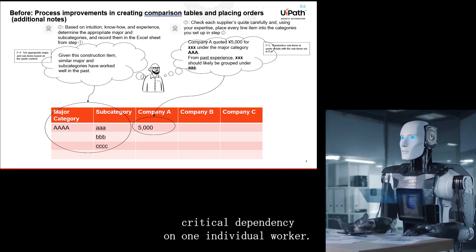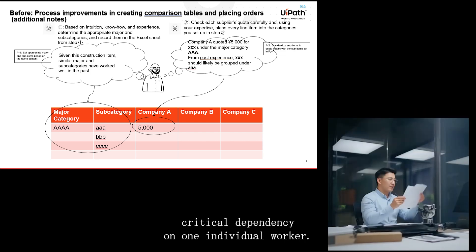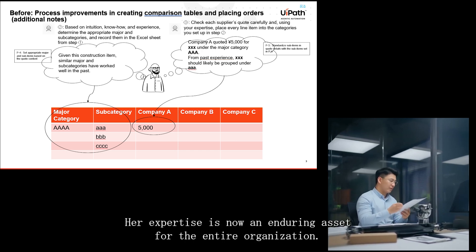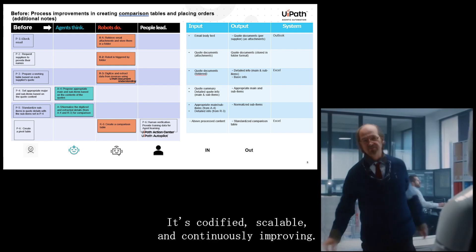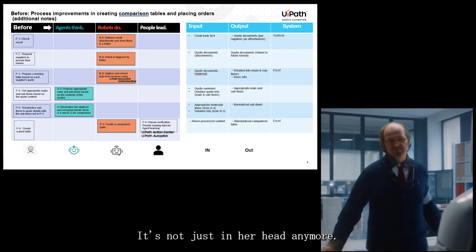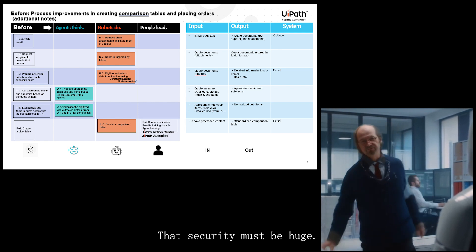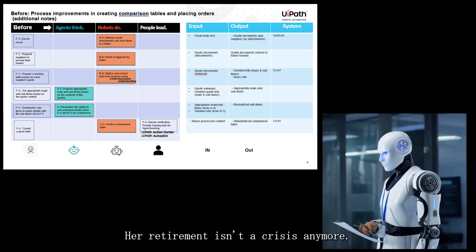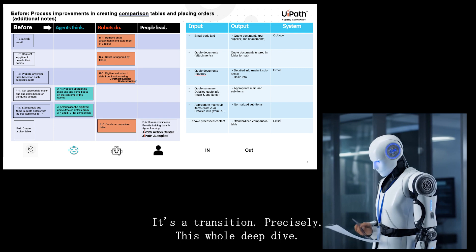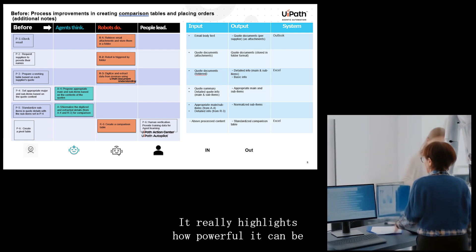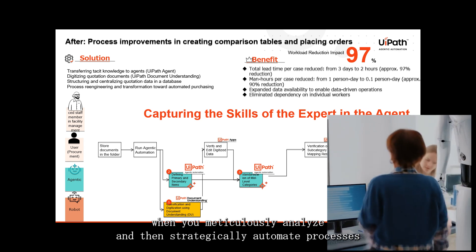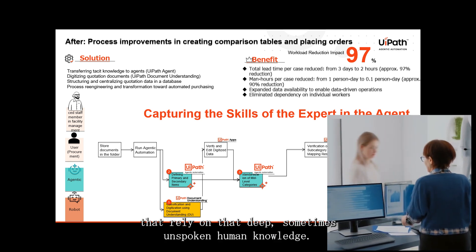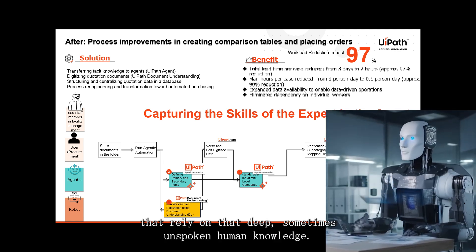Perhaps most importantly, it eliminated the critical dependency on one individual. Sarah's invaluable knowledge and expertise is now an enduring asset for the entire organization — codified, scalable, and continuously improving. It's not just in her head anymore. Her retirement isn't a crisis anymore; it's a transition. This highlights how powerful it can be to meticulously analyze and strategically automate processes that rely on deep, sometimes unspoken, human knowledge.